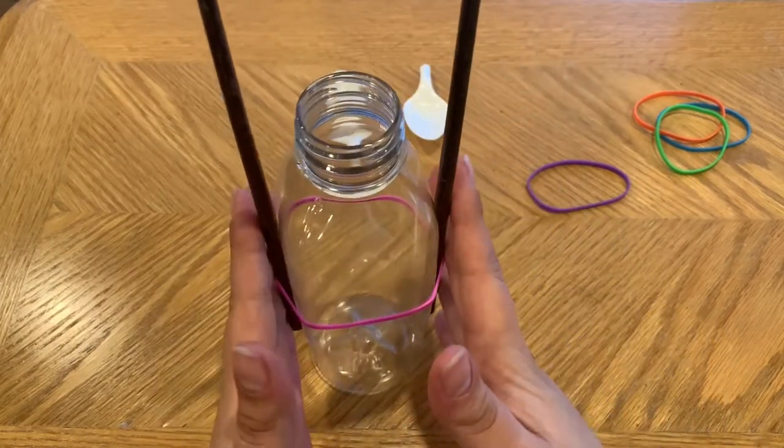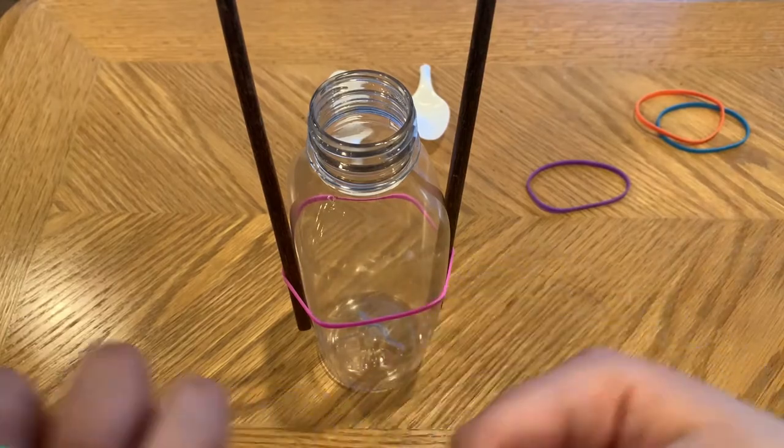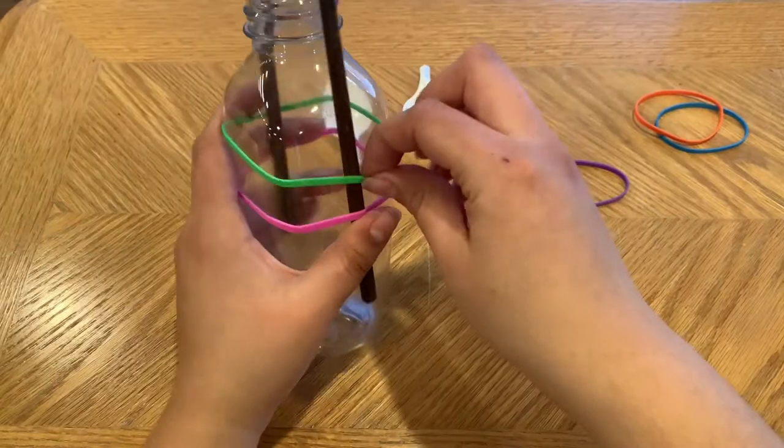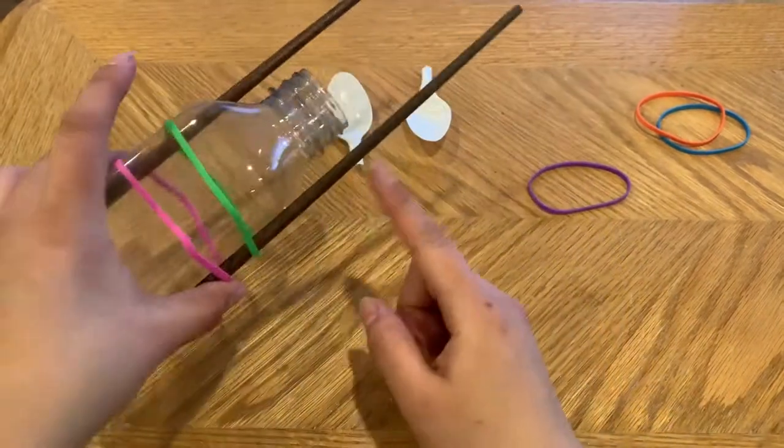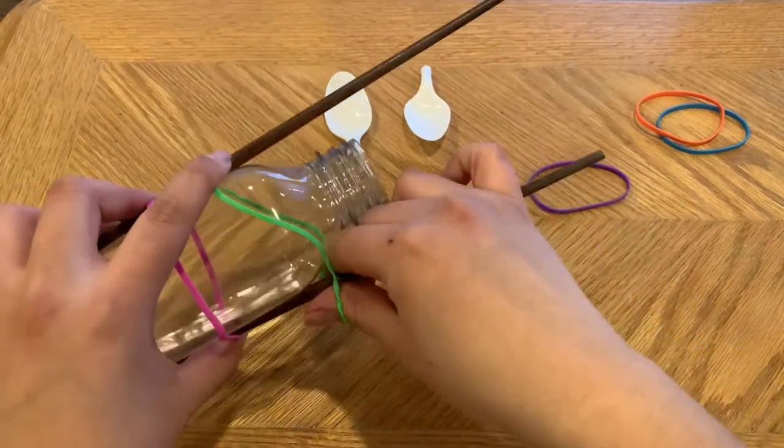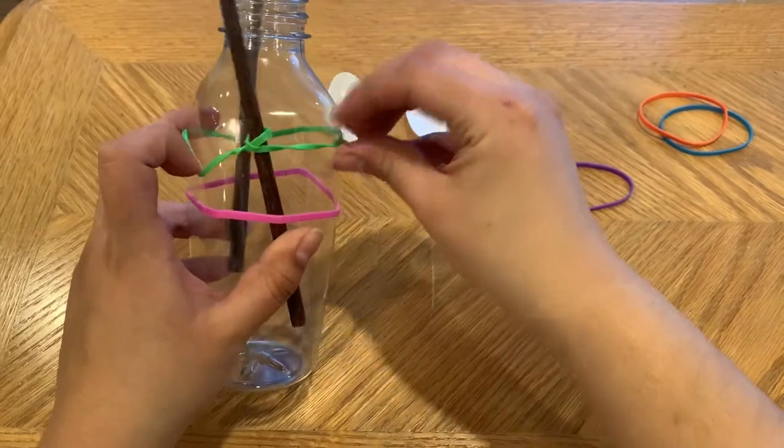Now that our chopsticks are being held on, we're going to grab another rubber band and put it over the chopsticks. Then we're going to take the green rubber band, twist it, and tie it over to wrap it around and bring it back down.